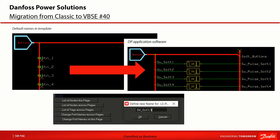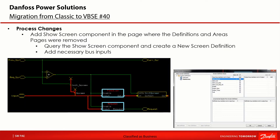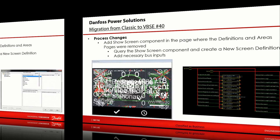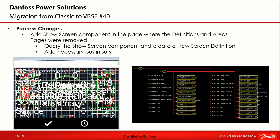The next step inside process changes is to add a show screen component in the page where the definitions and area pages were removed. Query the show screen component and create a new screen definition. Add necessary bus inputs which make signals available in the screen editor. In some projects in older displays all screens were on one single page, so the components were mixed and could be difficult to identify. To provide a better solution it is recommended to create separate pages for each screen and add all components related to a specific screen.